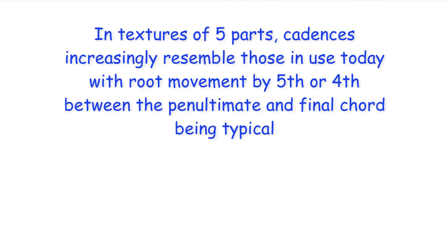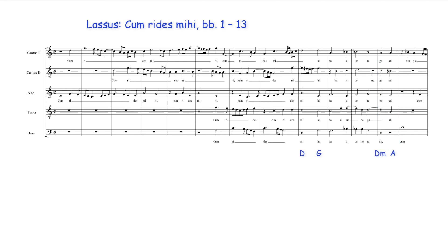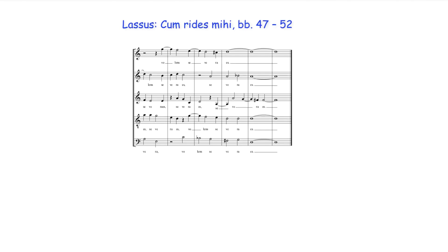In textures of five parts, cadences increasingly resemble those in use today, with root movement by fifth or fourth between the penultimate and final chord being typical. This cadence, for example, resembles a perfect cadence in G; this one an imperfect cadence in D; and to end the work, Lassus uses a cadence resembling a plagal cadence in D.